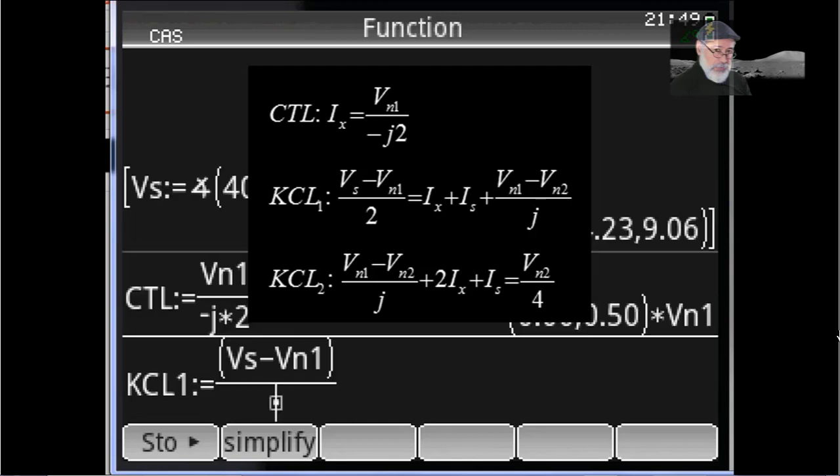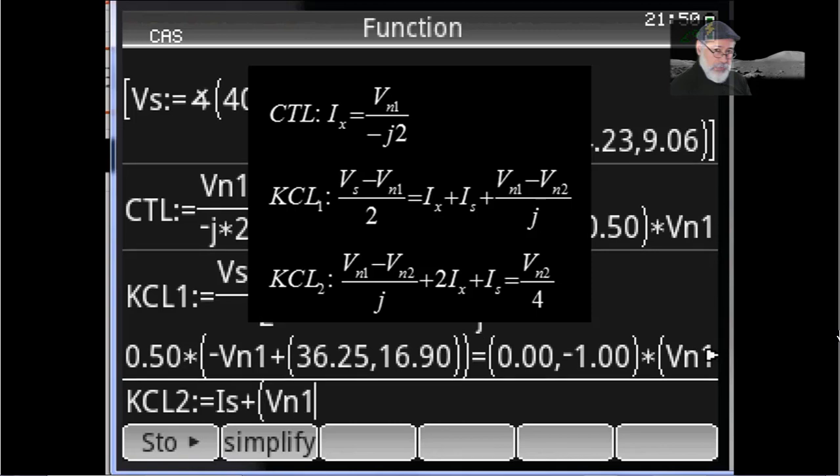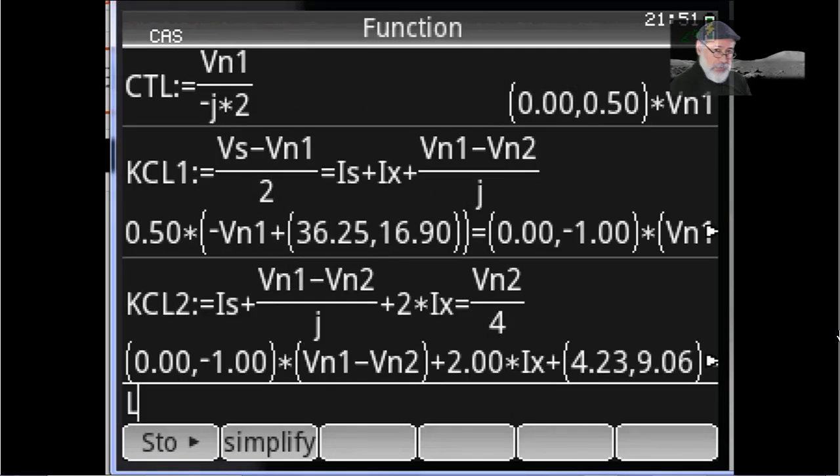Then KCL1. Vs Vn1. Why do I call the voltage in the nodes Vn1 and not just V1? Because V1 is a reserved name for the calculator. Later on, I'll show you my preferred way for labeling unknowns in this calculator, which is not this one. And KCL2 is whatever it is. I'm just typing whatever is there. That is KCL2. Vn2 divided by 4. We're ready.